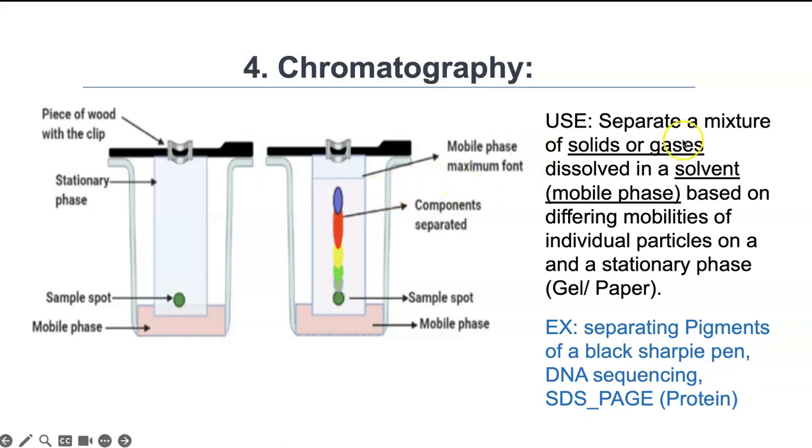So separating a mixture of solids or gases dissolved in a solvent—that's what you use this for. Examples of this could be separating colors in a black Sharpie pen, DNA sequencing. If you're in biochemistry, you'll do SDS-PAGE, which is a way of separating proteins by their size and speed of migration, or separating DNA fragments on an agarose gel.